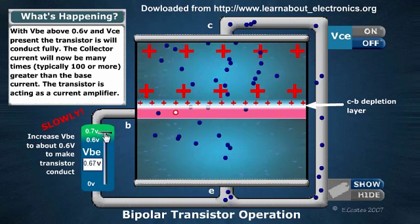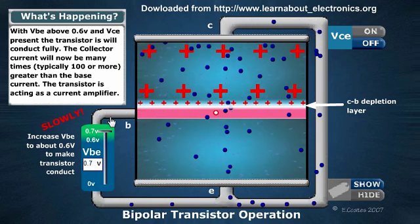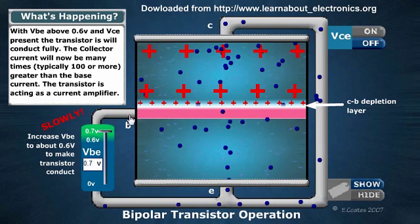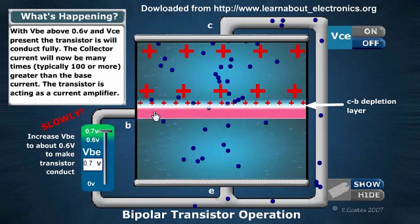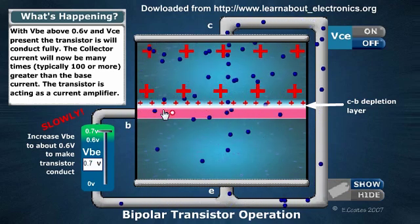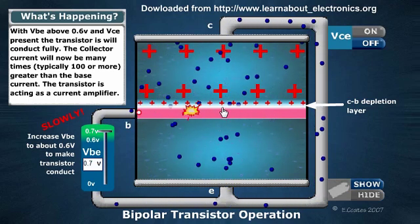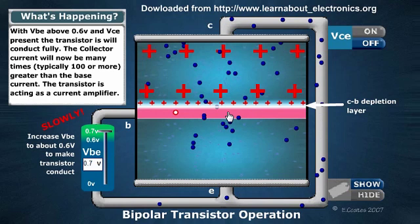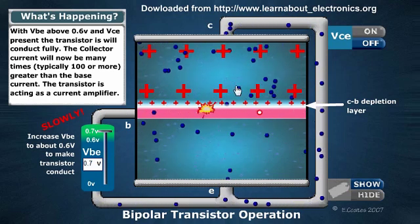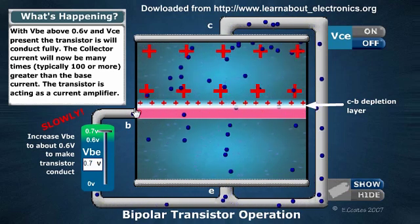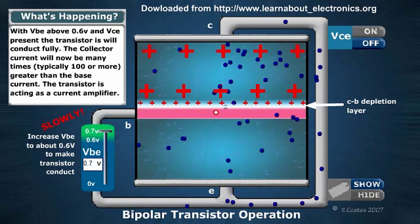Now we get to 0.7V. The base is now providing all that it can provide — as many positives coming in here to attract the negatives across the depletion zone as possible. That's how the NPN transistor works.